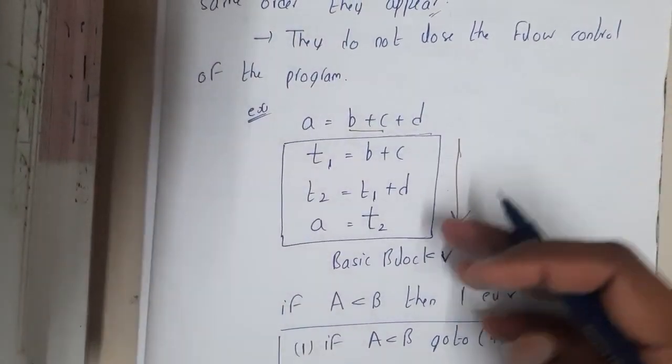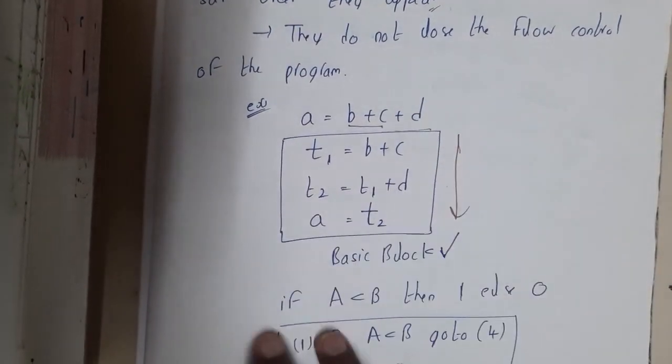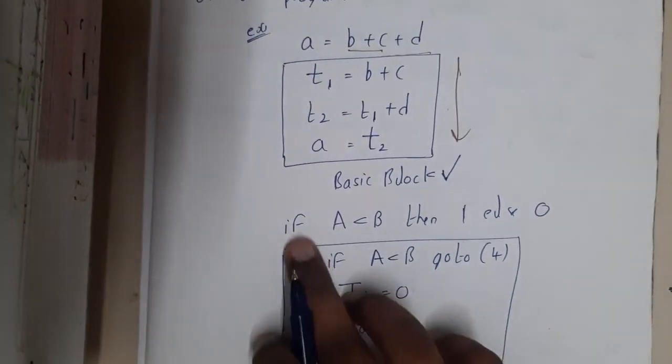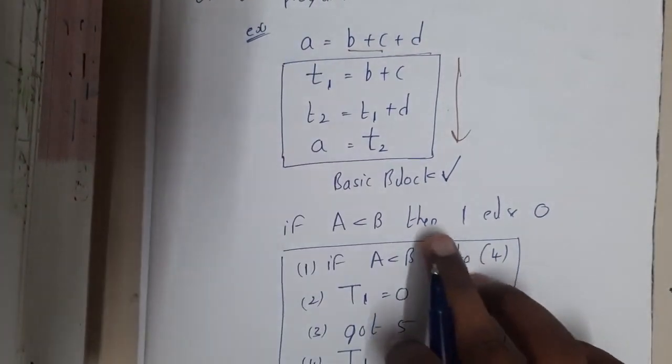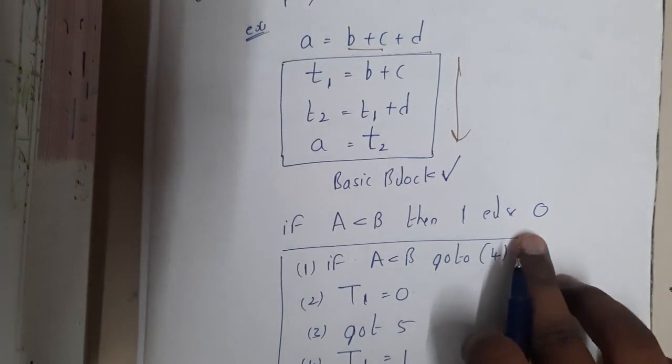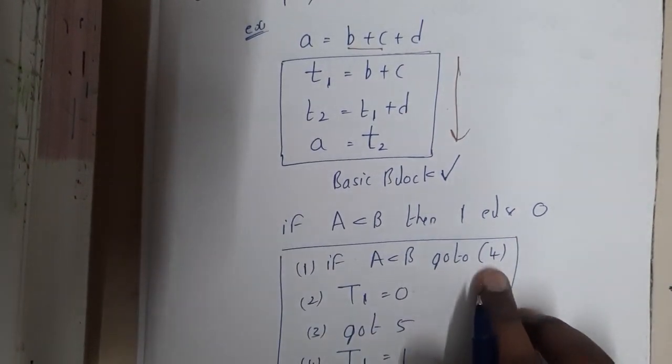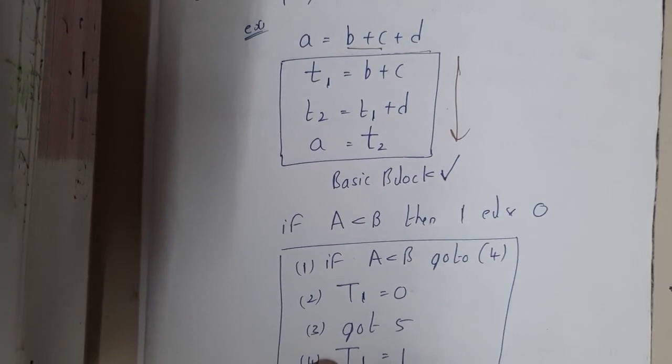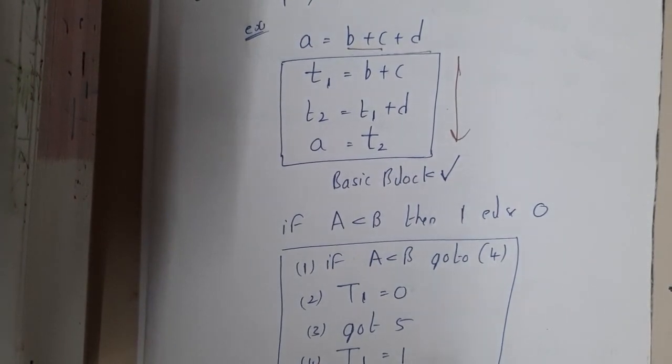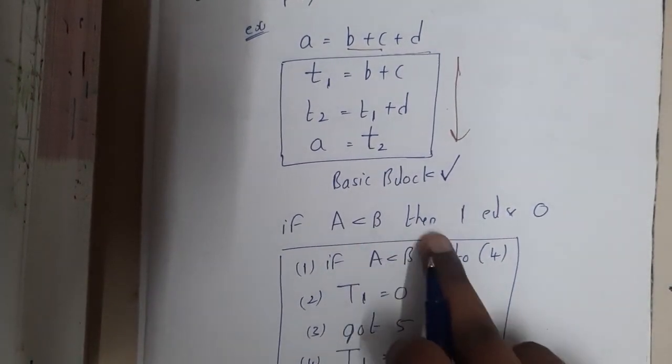Similarly, if you take another example: if a is less than b, then 1, else 0. If a is less than b, go to 4. So 4 is nothing but this position - t1 equals 1.